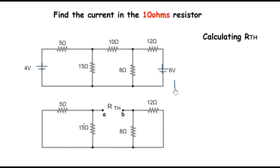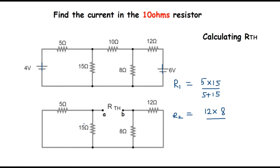For the 15 ohms and 5 ohms resistors in parallel, I'll call that R1. R1 equals 5 times 15 divided by 5 plus 15. That gives me 75 divided by 20, which equals 3.75 ohms.